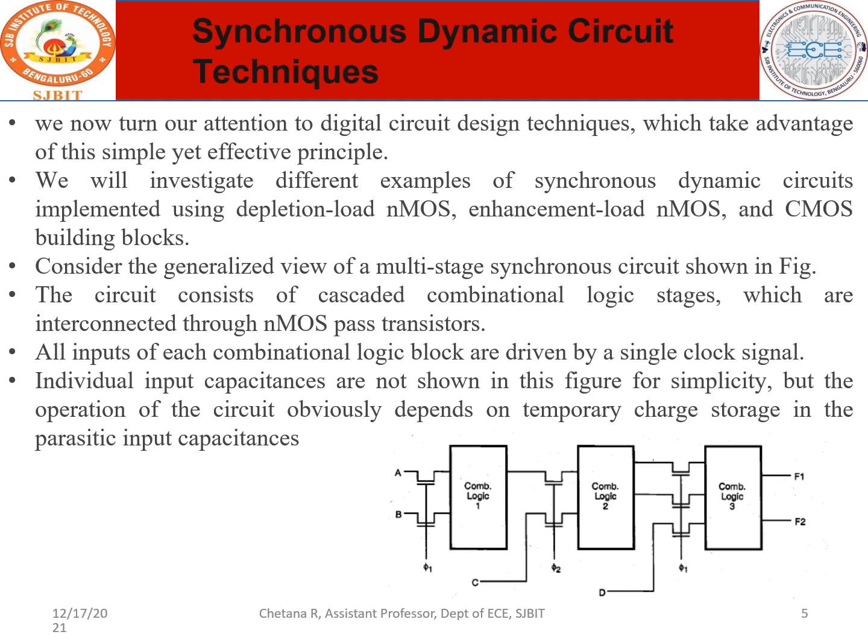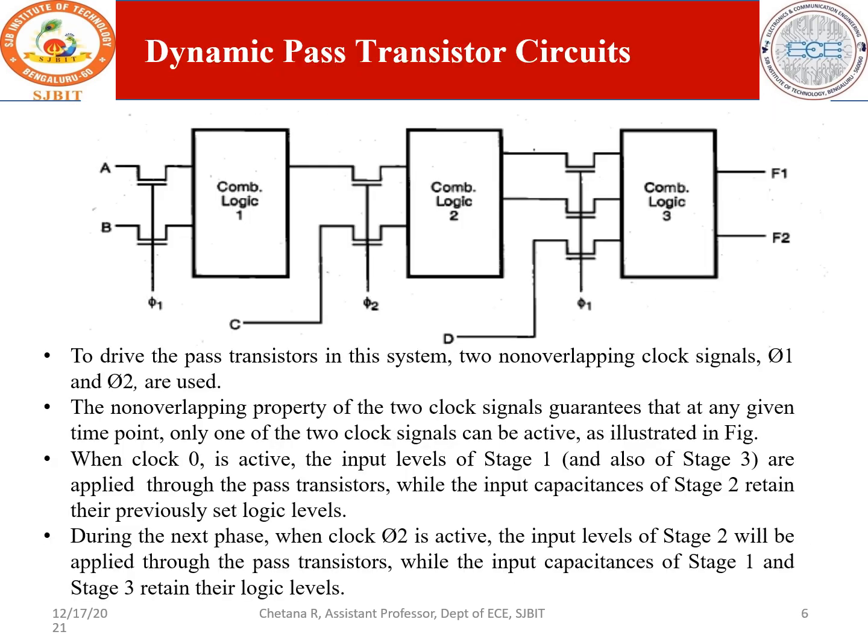Though individual input capacitances are not shown, the operation of the circuit depends on the temporary charge storage in the parasitic input capacitance. The amount of charge stored determines how the device operates further. This leads to the next circuit family: dynamic pass transistor circuits. Since the pass transistors are driven by a clock, the circuit is called dynamic.